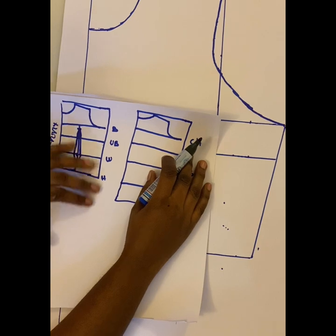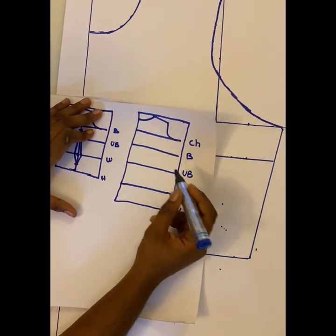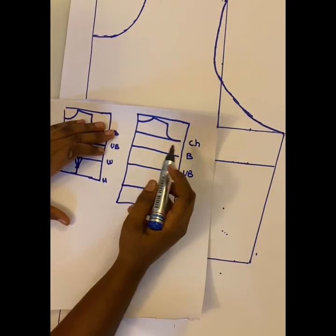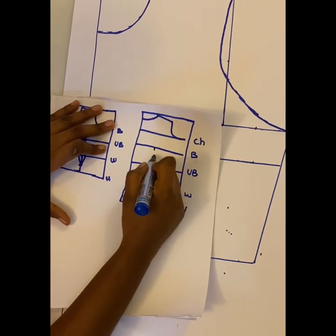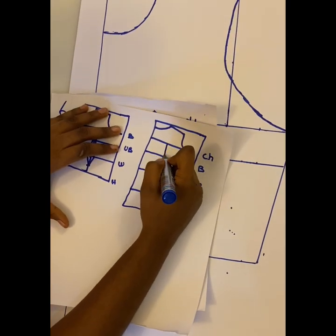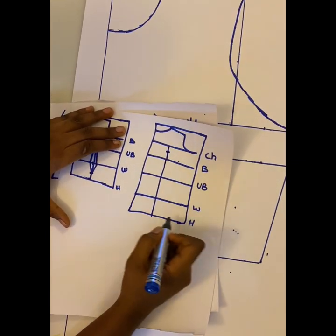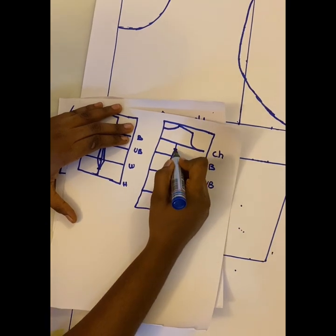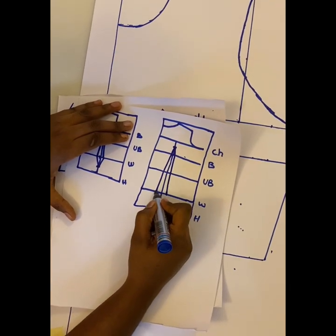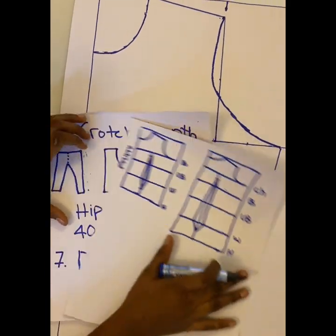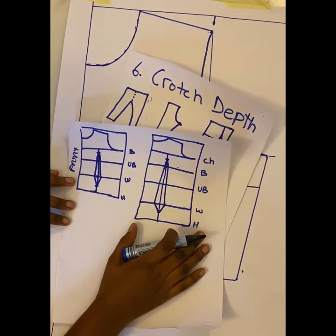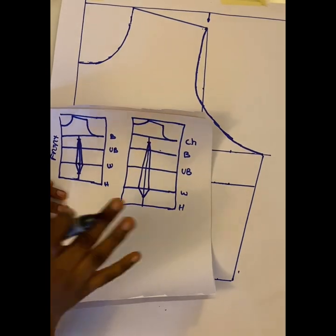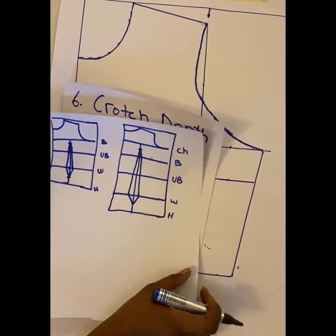For the back dart, it starts one inch below the upper chest — not the bust, but the upper chest — and ends two inches before the hips. Draw the bust span straight line first, then mark one inch below the chest line. Mark half an inch on both sides on the waistline, connect from the chest point, and connect down to two inches before the hip point. I'll cover dart length in more detail when I upload the basic bodice block tutorial.